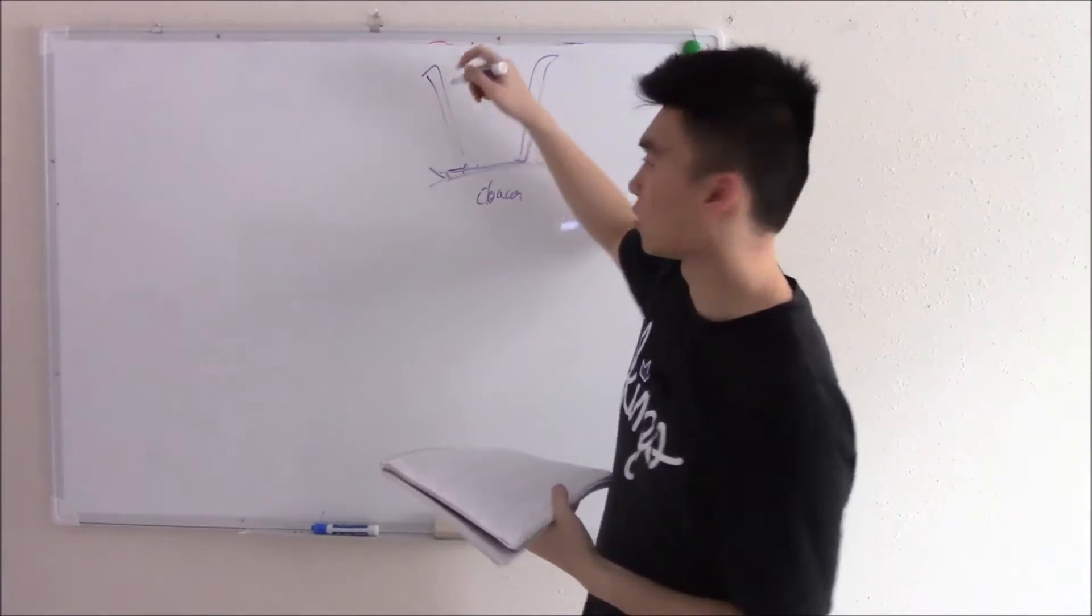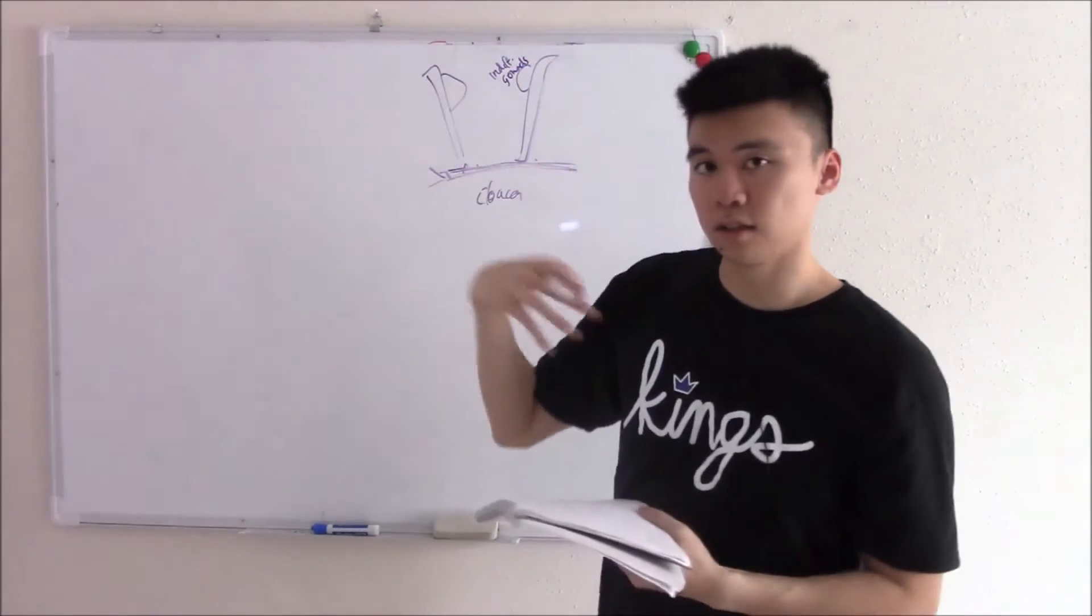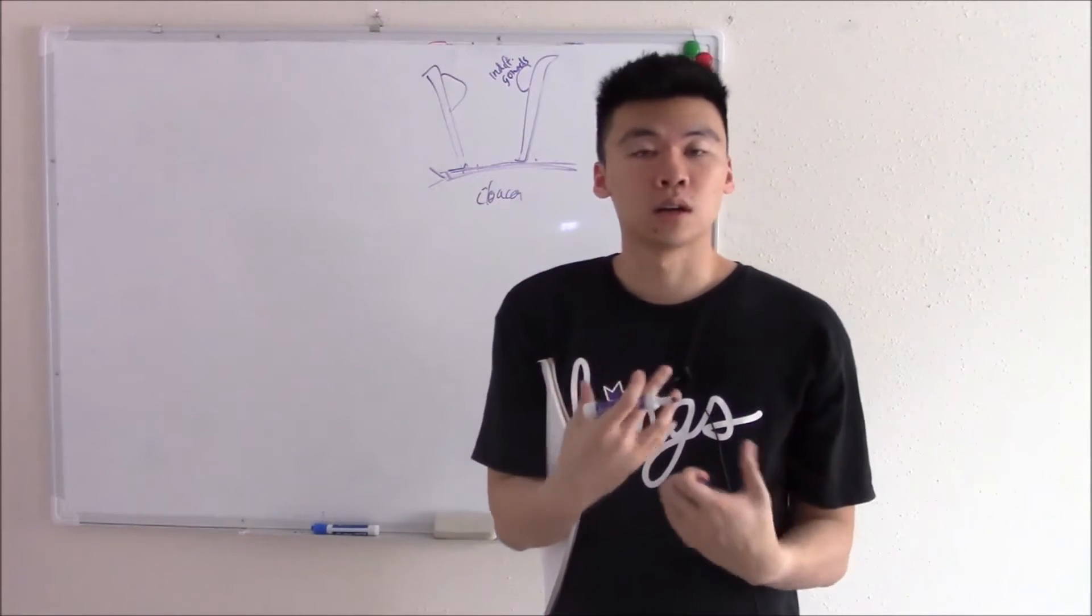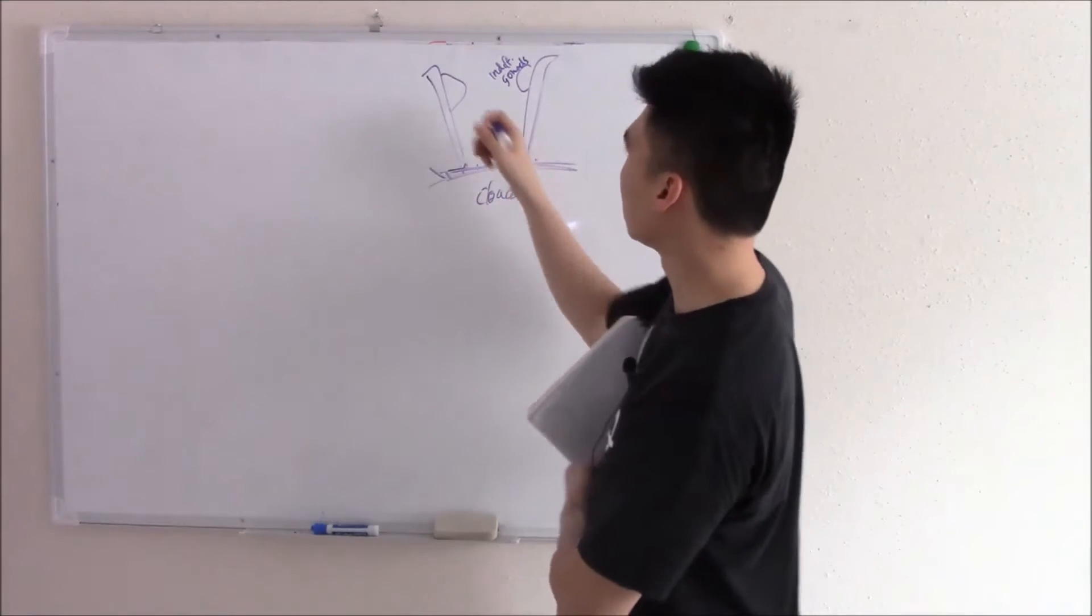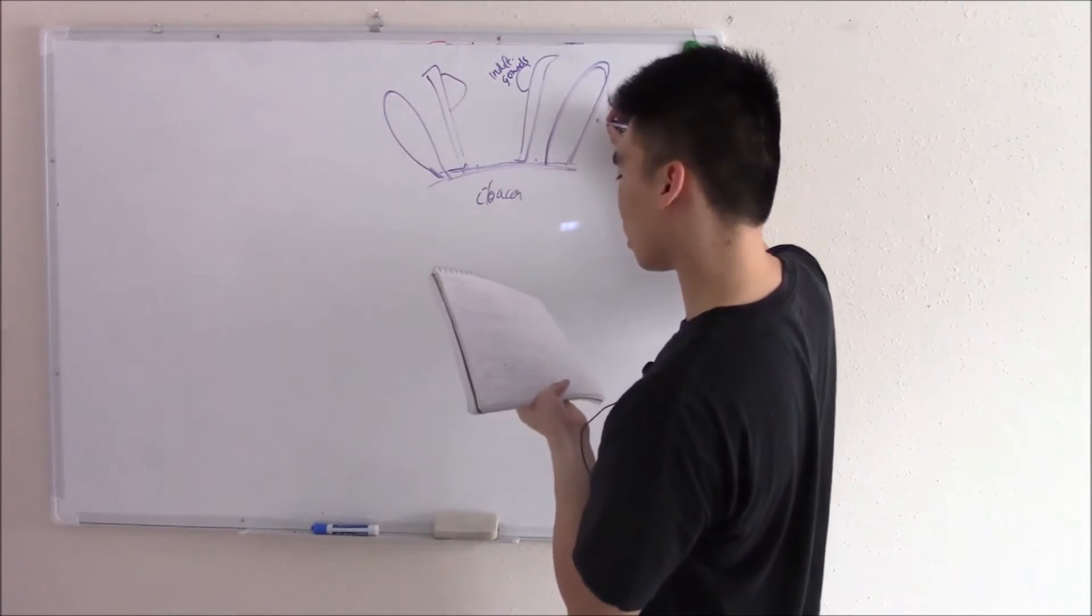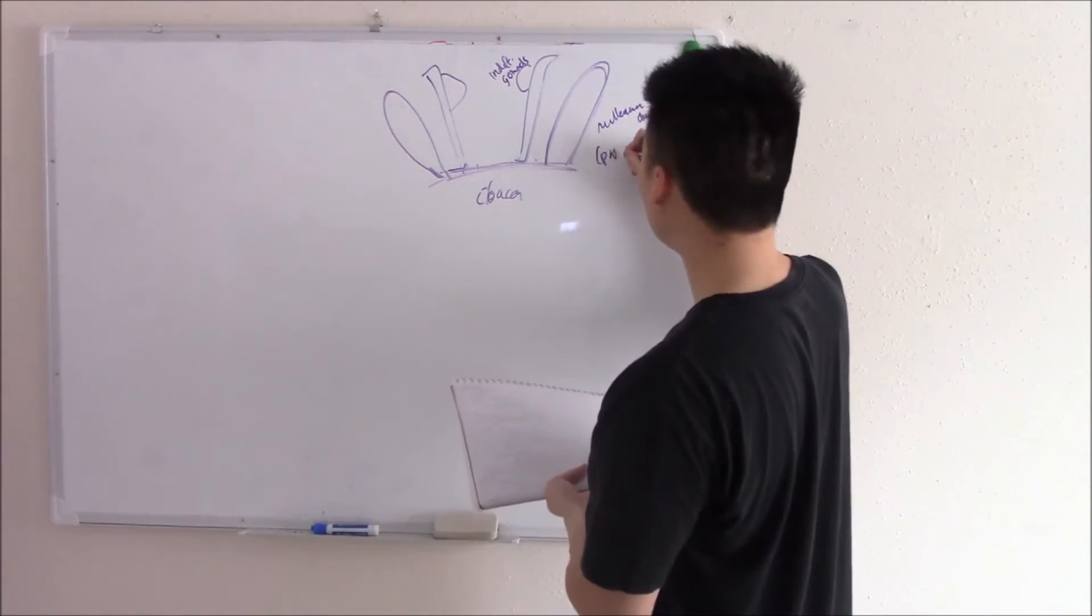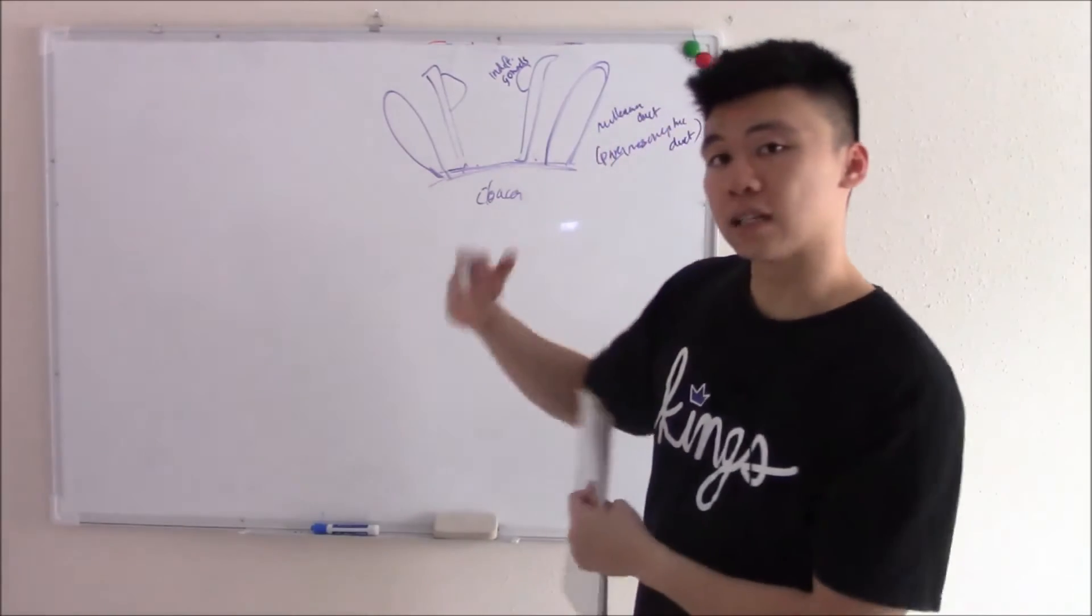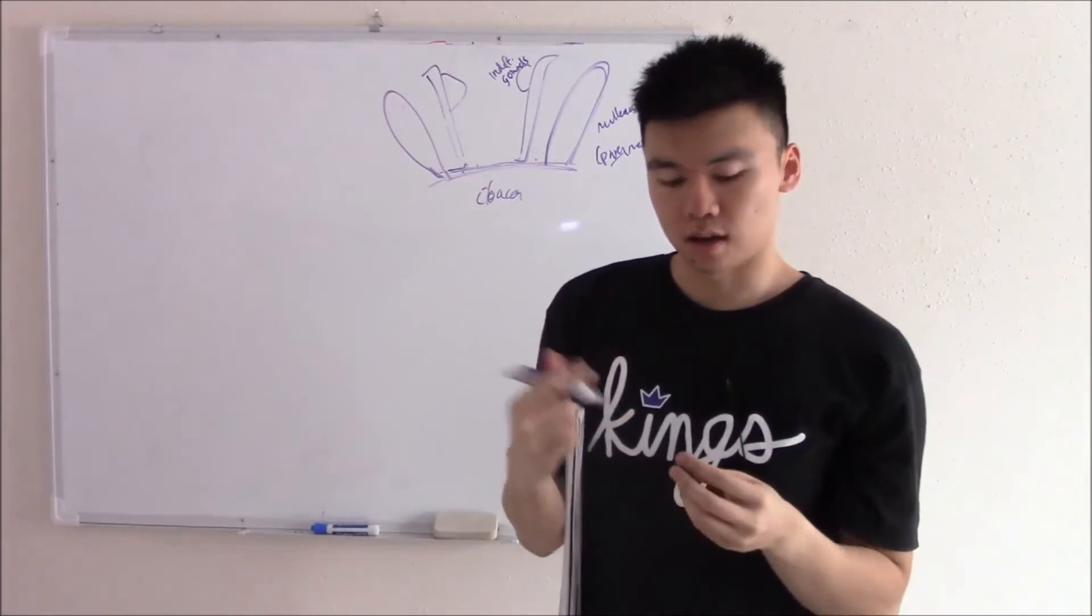Near your mesonephric duct, you have what are called indifferent gonads. They are exactly what they sound like - just gonads waiting for either a Y chromosome or the lack of a Y chromosome to become your actual gonads, either your testicles or your ovaries. But because we're talking about female reproductive tract, we're going to talk about the ovaries. So these will eventually become your ovaries. Also at this time, you have another duct forming - this is called your Mullerian duct. It forms next to the mesonephric duct, so sometimes it's also called paramesonephric duct. Between your paramesonephric duct and your indifferent gonads, these form the majority of your female reproductive system.